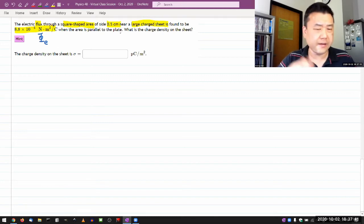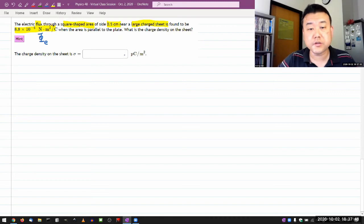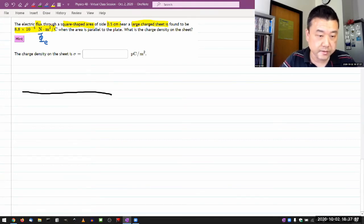Oh, that means... Yeah. Let me actually draw this. I am going to draw the side view of both the charged sheet and the square-shaped area. So in the side view, the charged sheet would appear something like this.